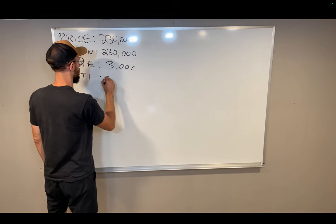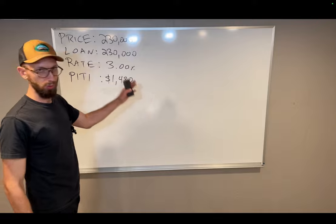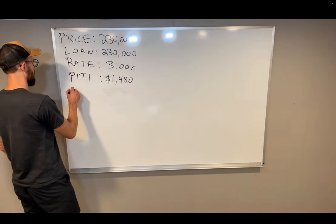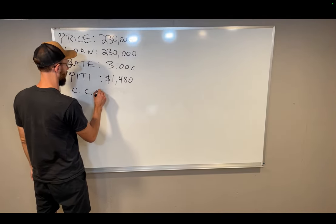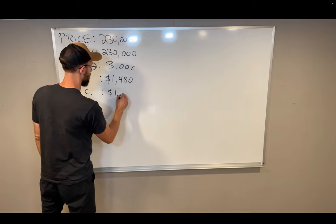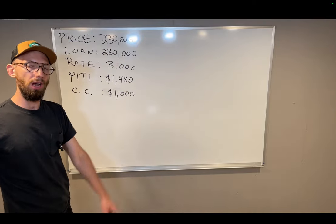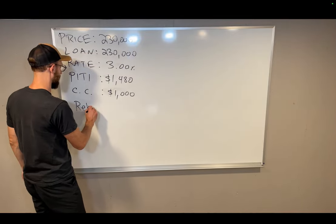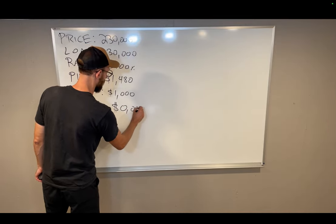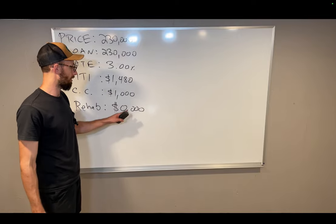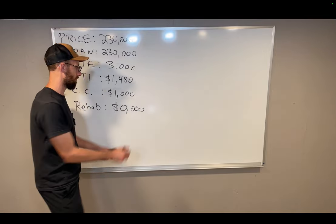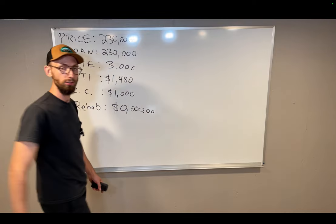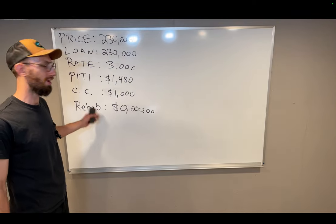The loan balance was $230,000. The interest rate that he got on the loan modification was flat 3%. Amazing interest rate. PITI was approximately $1,480 a month. Our closing costs were very, very minimal, just about $1,000. What did we do to this property to get it ready to sell? Well, we did nothing. We spent $0 and $0,000, $0.00 on a rehab on this property.